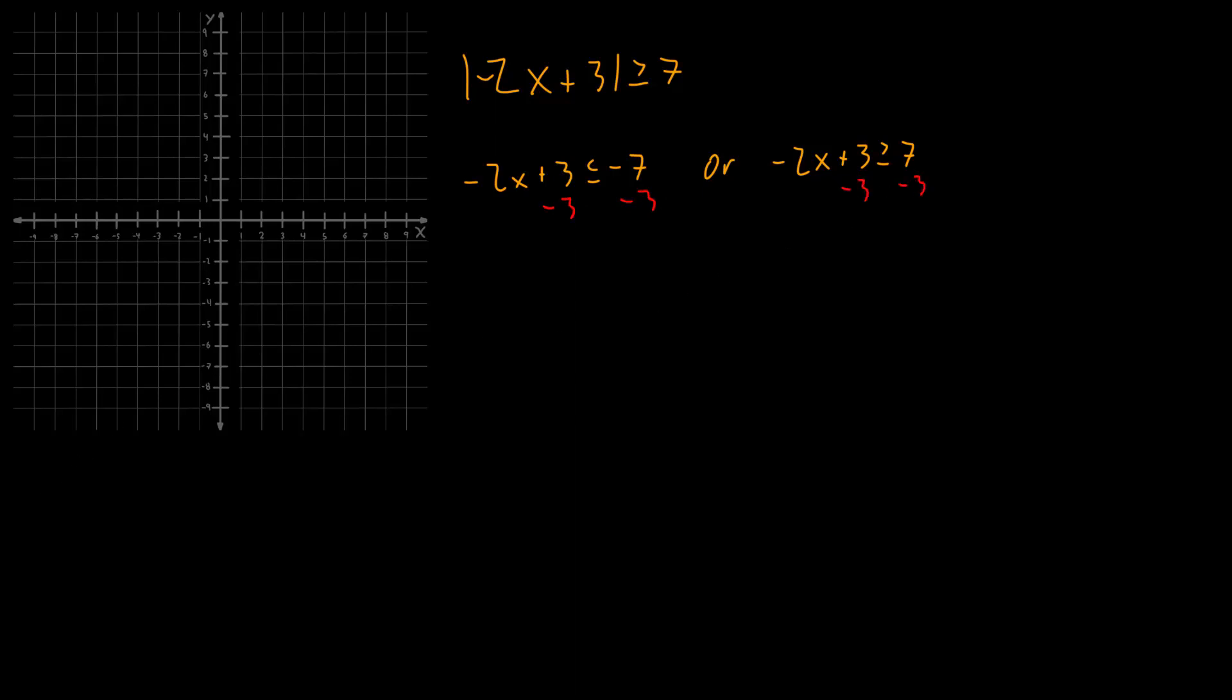Here, this is kind of the b value for a y equals mx plus b type of equation, negative 2x. That's going to be, let's see, negative 7 minus 3, that's going to be negative 10.